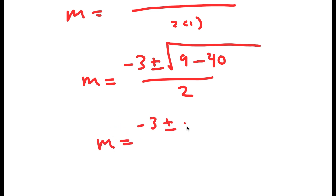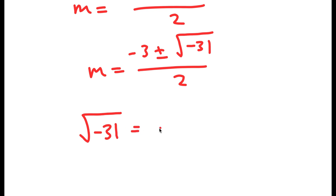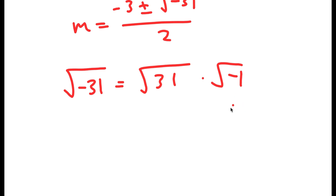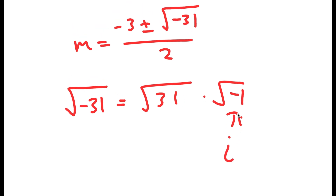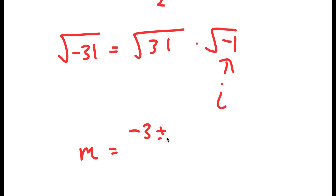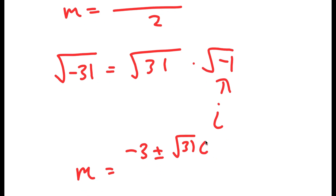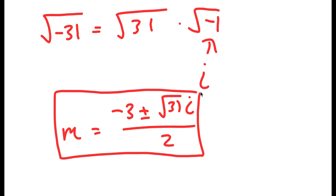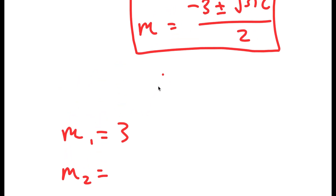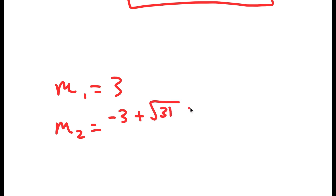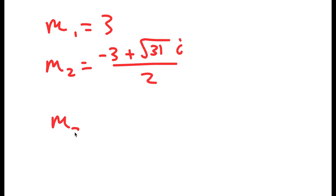This is equal to negative 3 plus or minus the square root of negative 31 over 2. The square root of negative 31 is equal to the square root of 31 times i, since the square root of negative 1 equals i. So this gives negative 3 plus or minus the square root of 31 times i over 2. My three solutions for m are: m equals 3, m equals negative 3 plus the square root of 31 times i over 2, and m equals negative 3 minus the square root of 31 times i over 2.